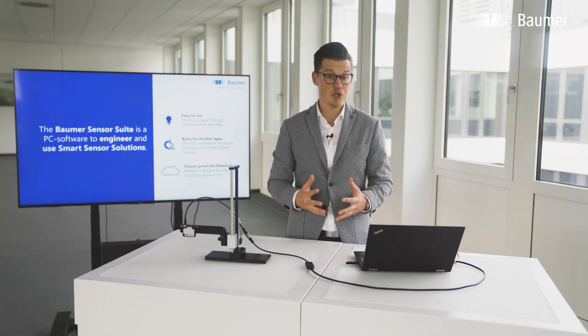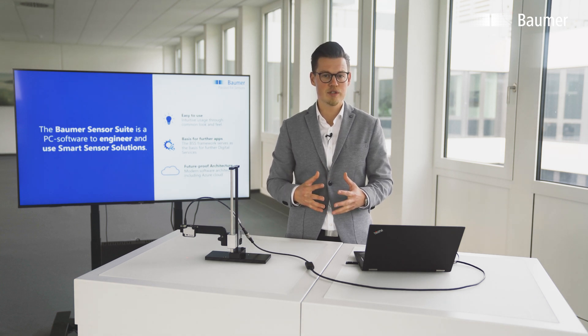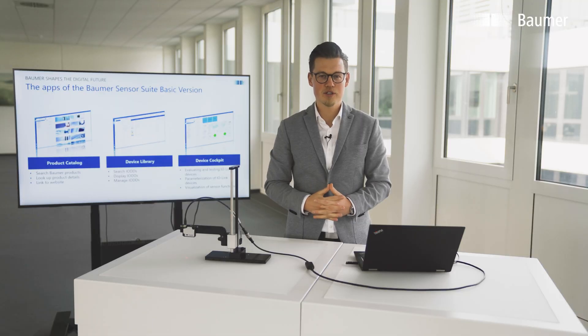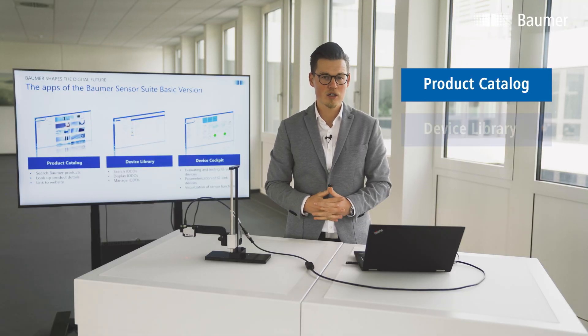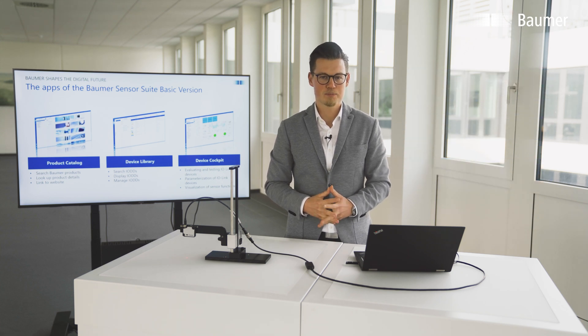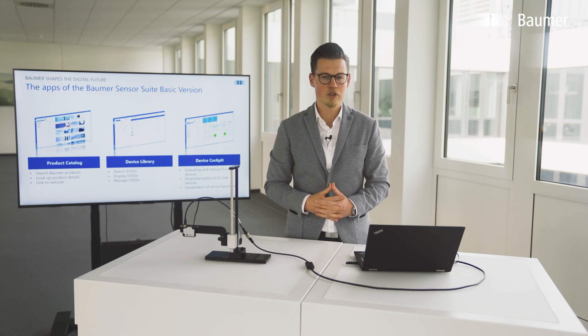The basic version is only the starting point for further software products from Baumer for developing and using smart sensor solutions. The basic version contains three apps: the product catalog, the device library, and the device cockpit. Especially the device cockpit is very powerful when it comes to sensor function visualization.